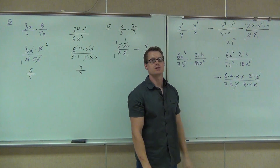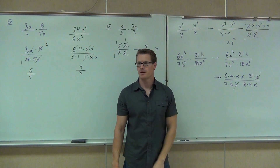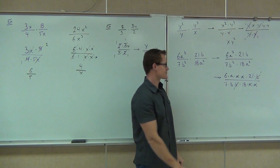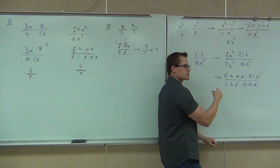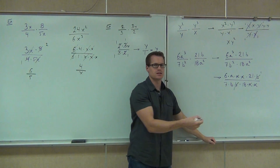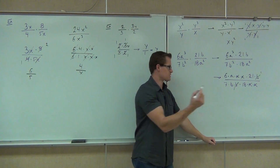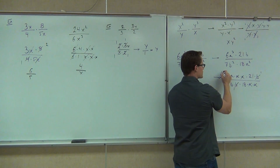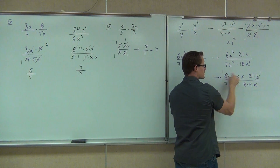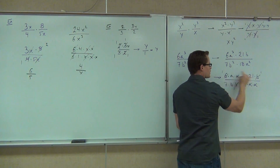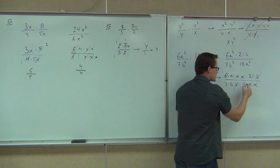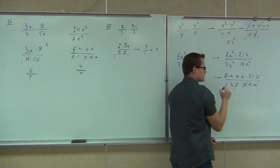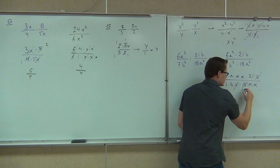Let's do the numbers now. Six and 18 — what goes into both six and 18? Six. Six is great; we want the biggest one. Six goes into six how many times? Notice how we're getting a one — that's the same idea. Six goes into 18: three.